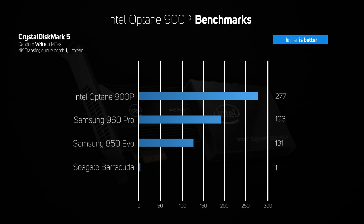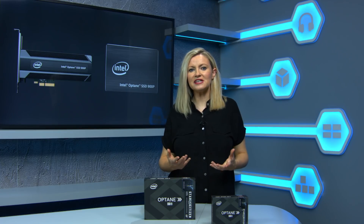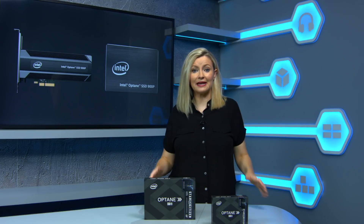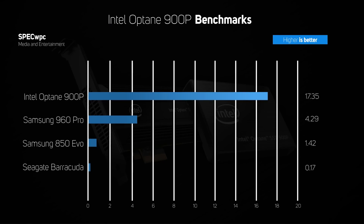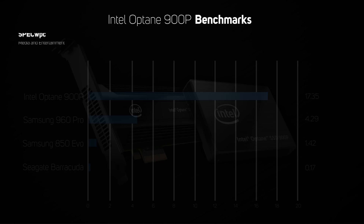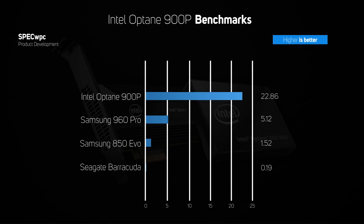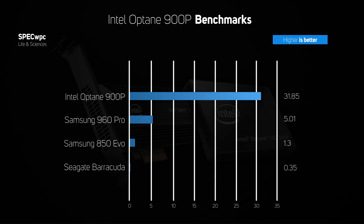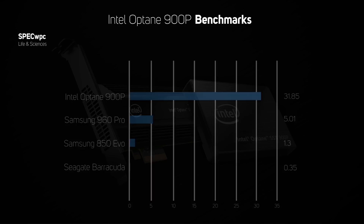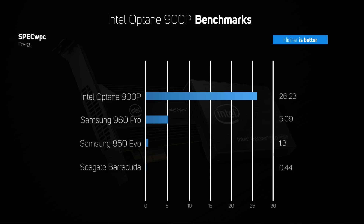We also ran the storage tests that form part of the SPEC WPC benchmark, used to measure the performance of workstations. The storage tests in SPEC WPC use a trace of different applications, which are then simulated by the iometer utility across 4 different application types. In all 4 application types, the 900p turned in by far the best results, with over a 300% performance lead against the 960 Pro, let alone the other drives. These are important benchmarks for the 900p to perform well in, as one of the main target markets of Optane SSDs is workstations, so it's great to see the drive excelling at these workloads.